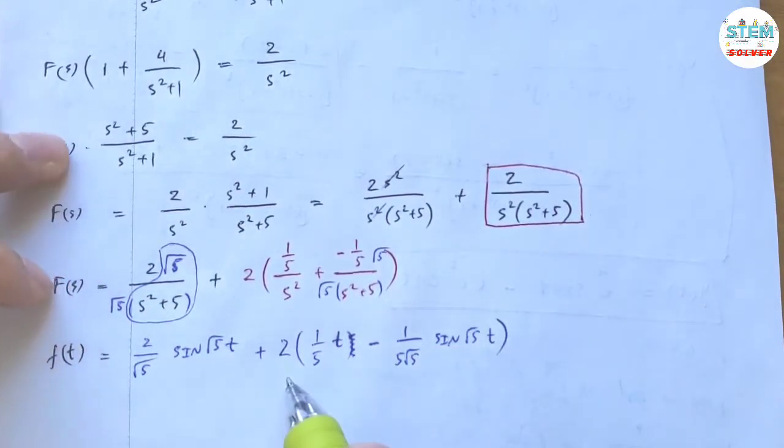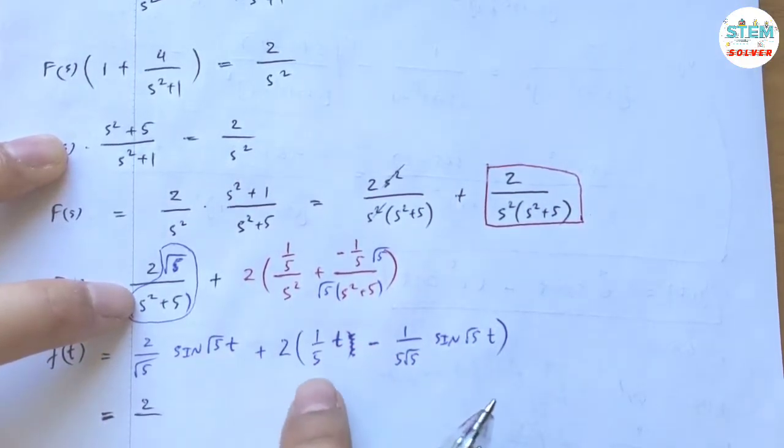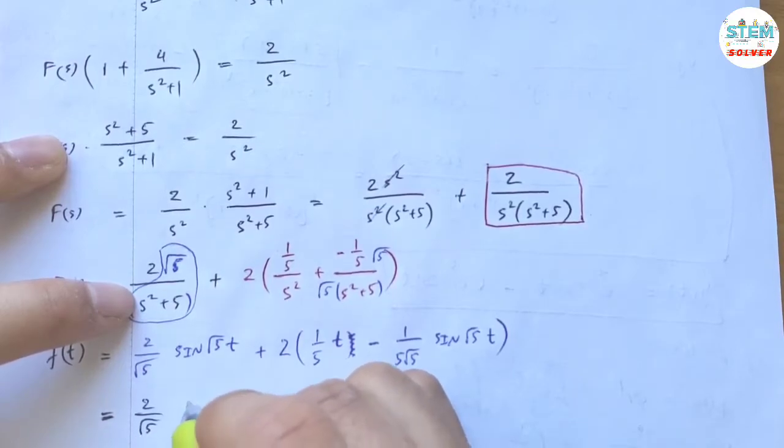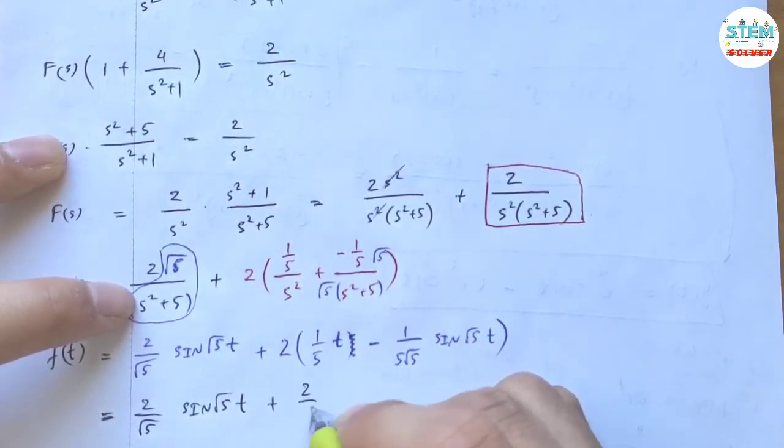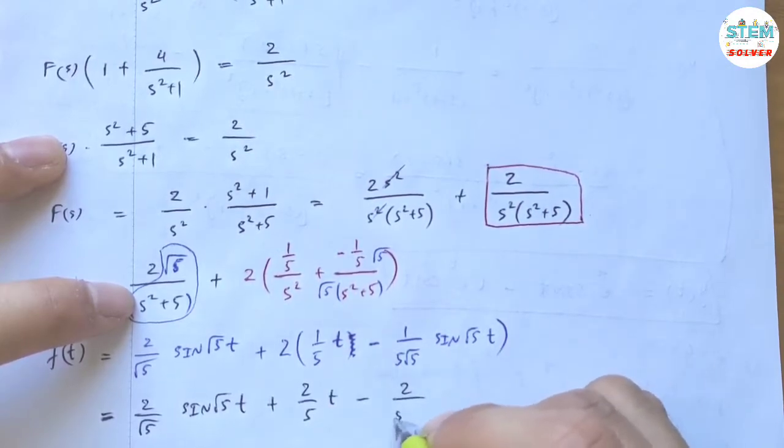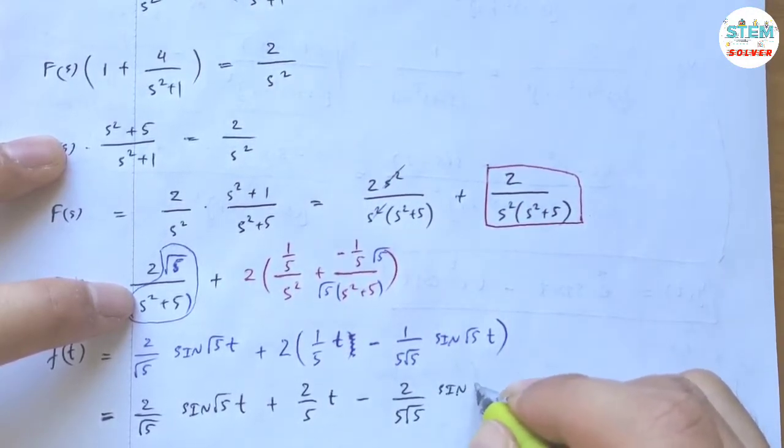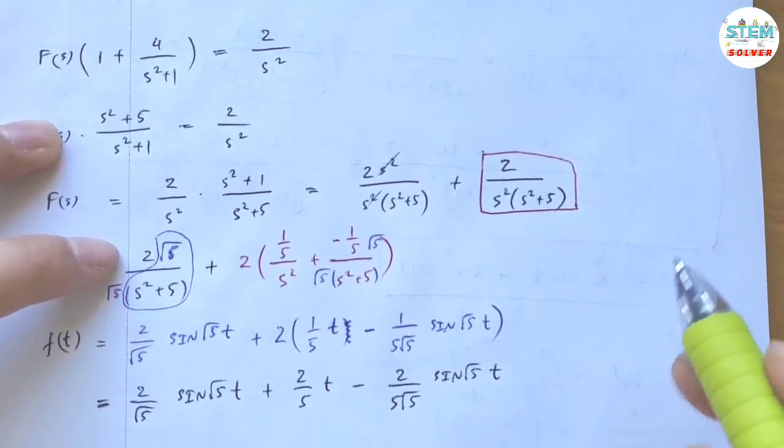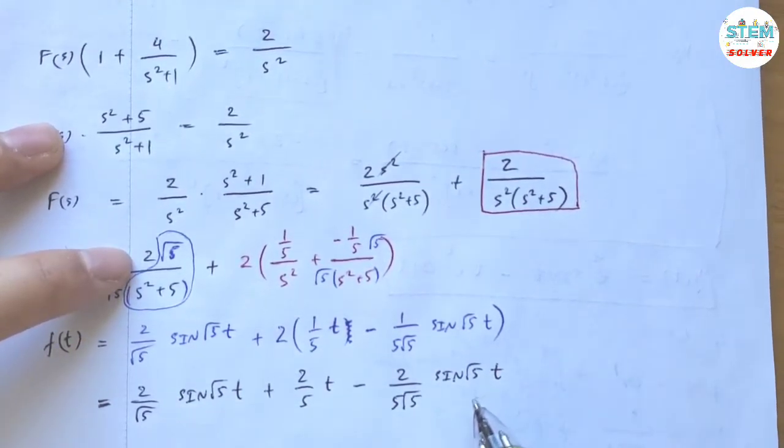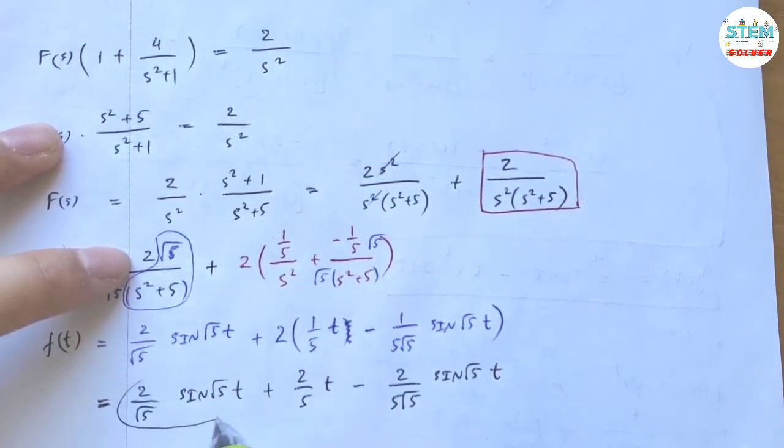So this is your answer, but if you want to go further, you can. So let me go further by distributing the 2 and making some simplification. So distribute the 2, I have 2/5t minus 2 over 5 square root of 5, sine of square root of 5 times t. As you can see, we have sine of square root of 5t in common, so we can combine them together.